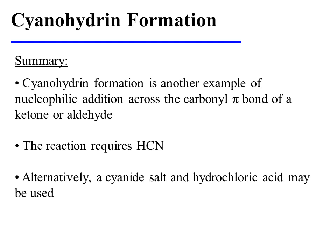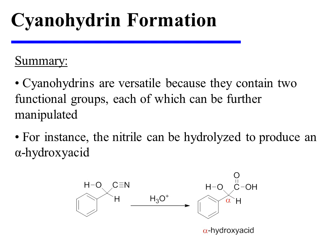In summary, cyanohydrin formation is another example of nucleophilic addition across the carbonyl pi bond of a ketone or aldehyde. The reaction requires HCN or, alternatively, a cyanide salt and hydrochloric acid may be utilized. Cyanohydrins are versatile compounds because they contain two functional groups — the hydroxyl group and the nitrile — each of which can be further manipulated. For instance, the nitrile can be hydrolyzed to produce an alpha-hydroxy acid.